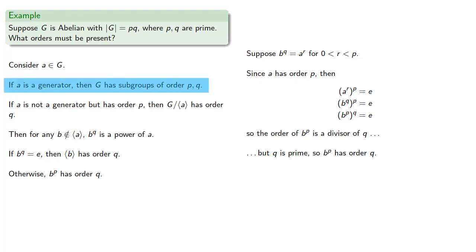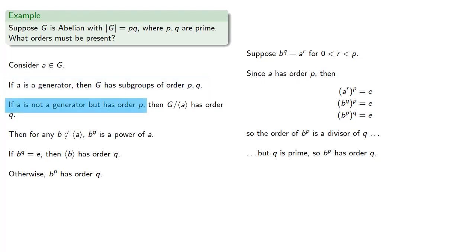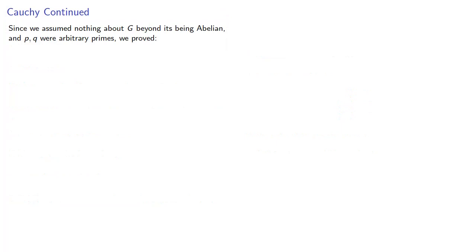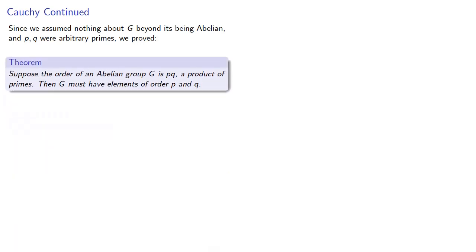What this means is that if we find a generator, we can produce subgroups of order p and q. And if we don't find a generator, we can still produce subgroups of order p and q. So if the order of G is a product of primes p and q, then G itself must have subgroups of order p and q. Since we assumed nothing about G beyond its being abelian and that p and q were arbitrary primes, we prove the following: if the order of an abelian group G is pq, a product of primes, then G must have elements of order p and q.